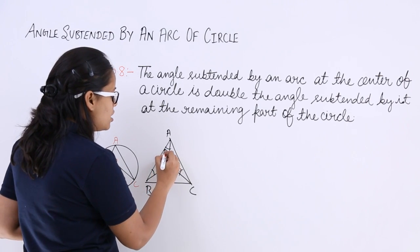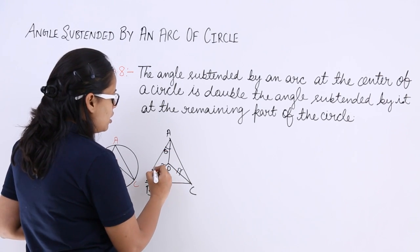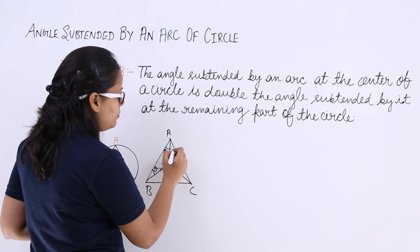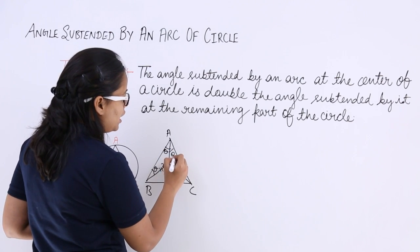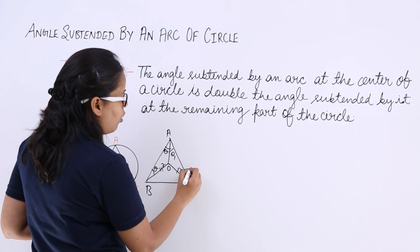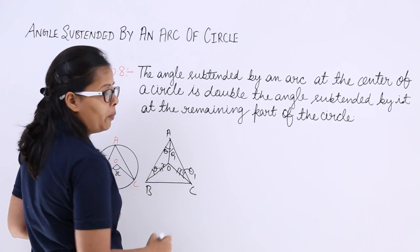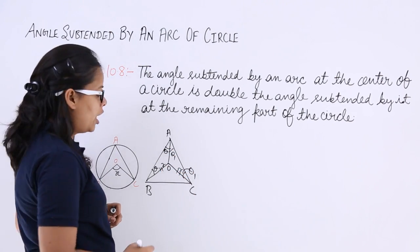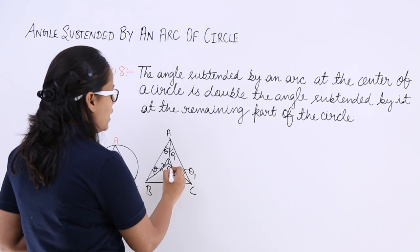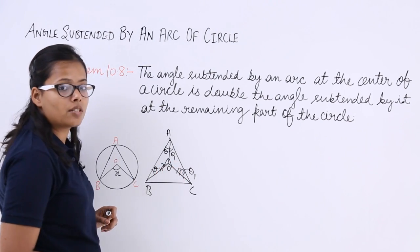Since angles opposite to equal sides of an isosceles triangle are equal: in triangle AOB, both base angles are θ, and in triangle AOC, both base angles are θ1. Now we need to find the angles at center O for each triangle.